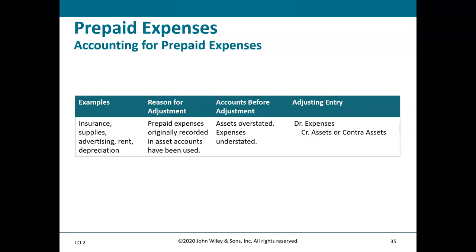Summary of prepaid expenses: examples include insurance, supplies, advertising, rent, and depreciation. These are originally recorded in asset accounts, but as those assets are used up, assets become overstated and expenses understated. The adjusting entry is to debit expense and credit the asset — or in the case of depreciation, the contra asset Accumulated Depreciation.